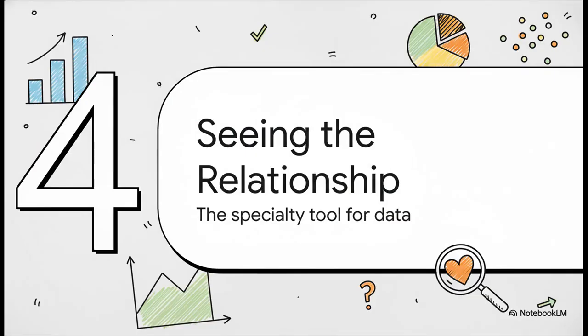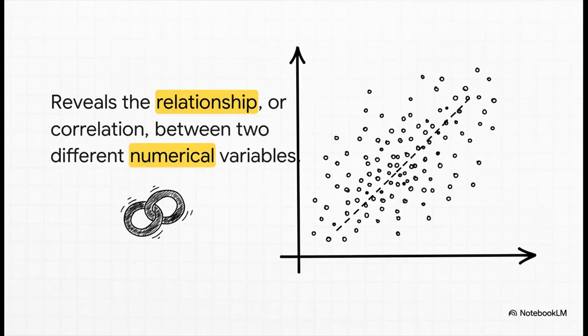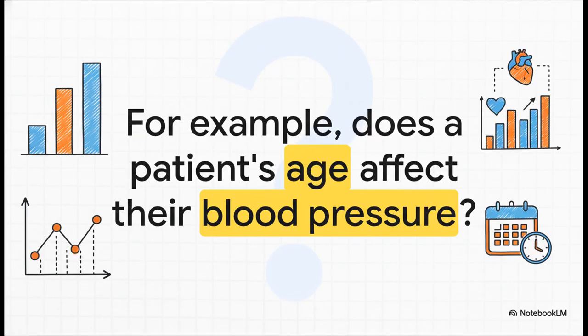Now, first specialty tool. We've looked at simple variables. But what if you want to see if two different numerical things are connected to each other? That is the exact job of the scatterplot. It helps you investigate if there's a relationship, or what we call a correlation, between two totally different measurements. A scatterplot is perfect for exploring a clinical question just like this one.